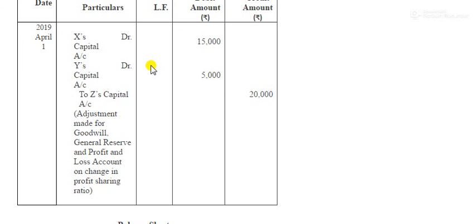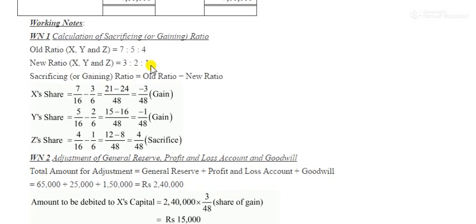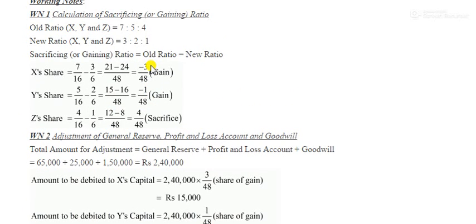To recap: the partners don't want to distribute reserves, don't want to change any given values, and don't want to record goodwill — so in every case the entry is gaining to sacrifice. They don't want to distribute profits either, so again the entry is gaining to sacrifice. Since all entries are gaining to sacrifice, we add everything together to get ₹2,40,000 and pass the single combined journal entry.